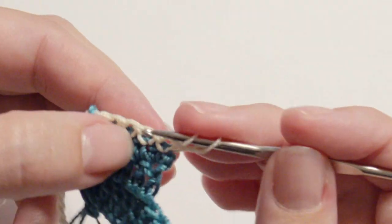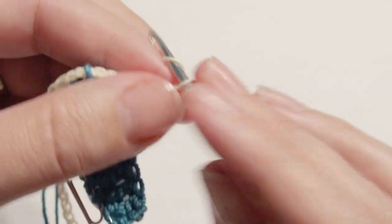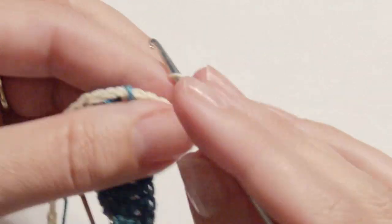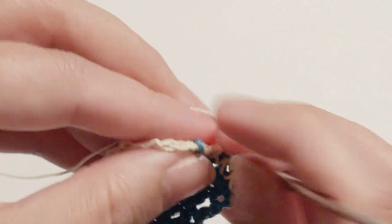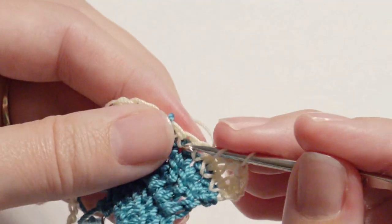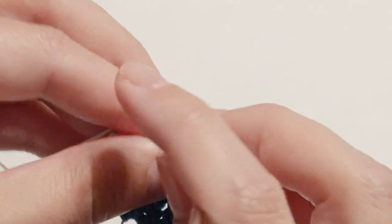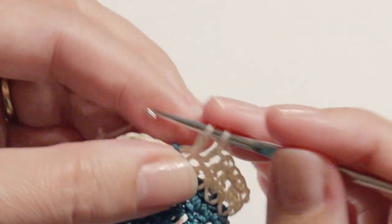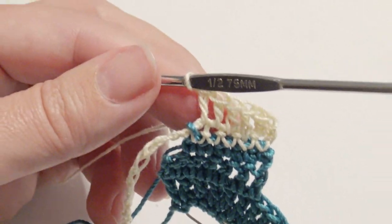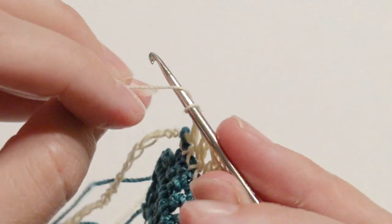Then chain two and then work your double crochet across just like you did on the previous skate on the white part. Then fasten off and weave in all of your ends with your yarn needle. Just pull it through and then weave in your ends.